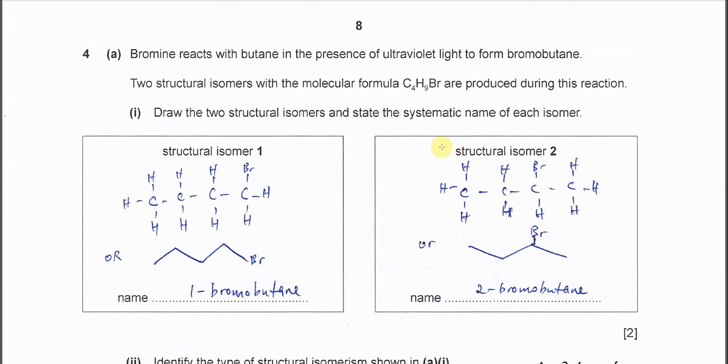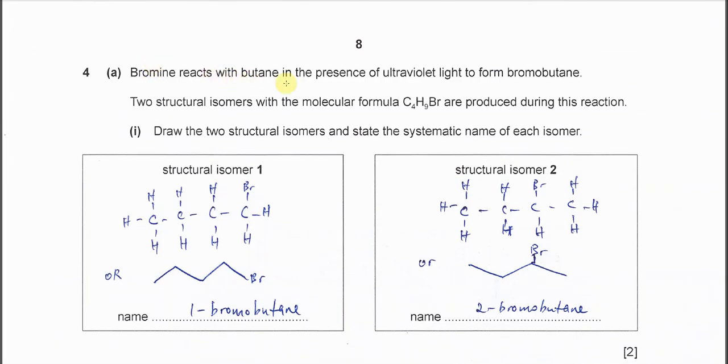Question 4a: Bromine reacts with butane in the presence of ultraviolet light to form bromobutane. Two structural isomers with the molecular formula C4H9Br are produced during this reaction. The butane skeleton is numbered 1, 2, 3, 4: CH3-CH2-CH2-CH3. Because it's given as butane, you don't put a branched molecule, just a straight chain.